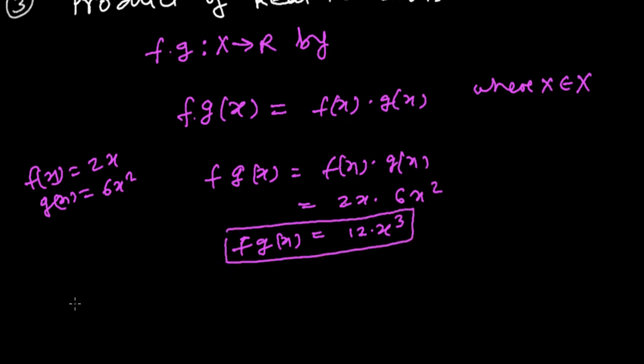And if we take an example, let's say x is, for a while, anything, it's a member of X. Let's say x equals 3, so it's going to be fg of 3 is going to be 12 times 3 cubed, that's 12 times...